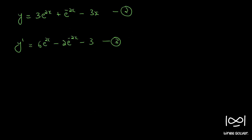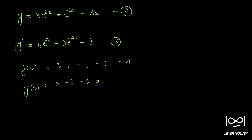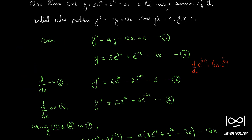Checking y(0): y(0) = 3·e^0 + e^0 - 3·0 = 3·1 + 1 - 0 = 4. And y'(0) = 6·e^0 - 2·e^0 - 3 = 6 - 2 - 3 = 1. We got y(0) = 4 and y'(0) = 1, which match the given initial values in the question. So the initial conditions are also satisfied, and y is a solution. Now we have to see whether this solution is a unique solution.